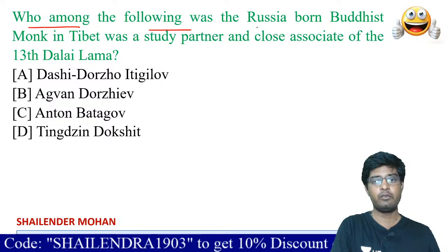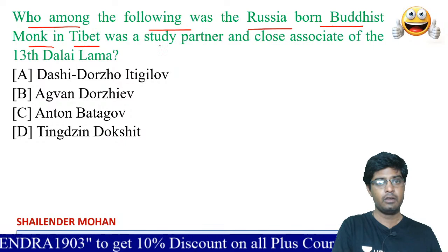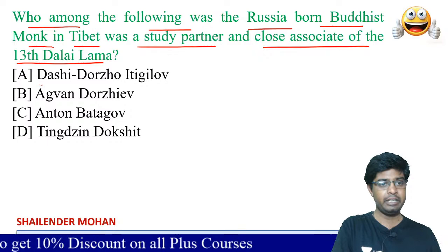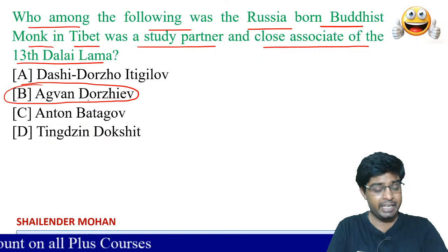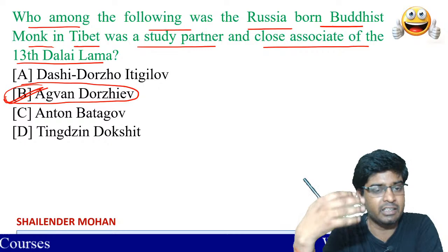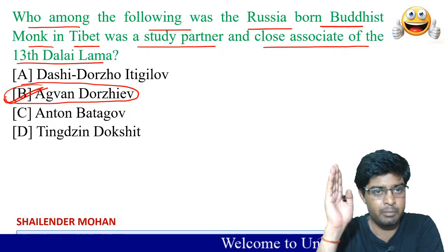Which Russia-born Buddhist monk in Tibet was a study partner and close associate of the 13th Dalai Lama? The answer is B option — Agvan Dorzhiev. He was associated with the 13th Dalai Lama, was born in Russia, and later went to Tibet and adopted Buddhism.